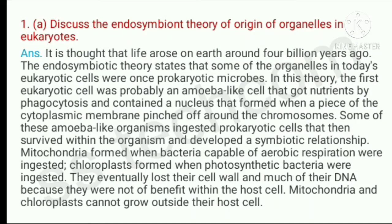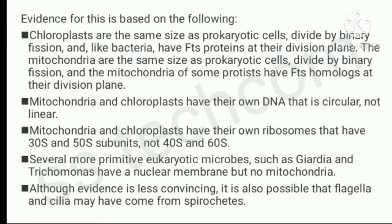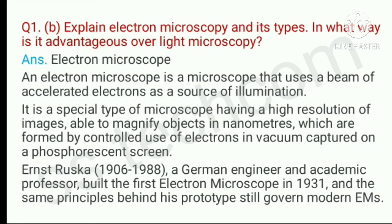Question number 1, A part: Discuss the endosymbiont theory of origin of organelles in eukaryotes. Question number 1, B part: Explain electron microscopy and its types. In what way is it advantageous over light microscopy?